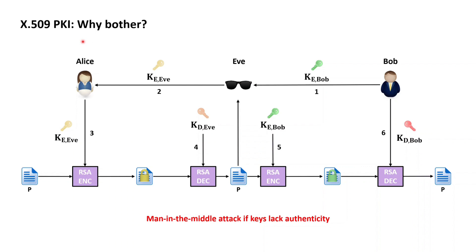As by our assumption, this public key now lacks authenticity. Alice may see that she immediately got a response to her request for the public key of Bob — this response may even look like it came from Bob — but due to the lack of authenticity on the key, Alice can't detect that the public key contained in the response is actually the key of Eve and not the key of Bob. Believing the public key is Bob's, Alice proceeds to encrypt her plaintext with the received public key, resulting in a ciphertext which Alice then sends out to Bob. However, given that the ciphertext was encrypted with the public key of Eve, Eve can again intercept the ciphertext and decrypt it into the original plaintext by making use of her corresponding private key.